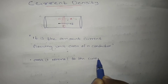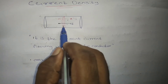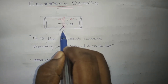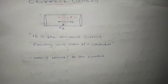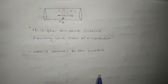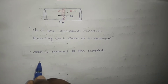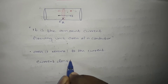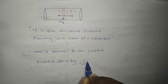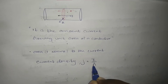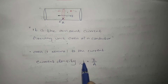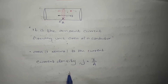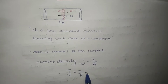Let A be the cross-section area of the conductor and I be the current flowing through it. Then the current density J is equal to I divided by A. That is the magnitude. If we consider the vector form, current density J is equal to (I/A) times n̂.